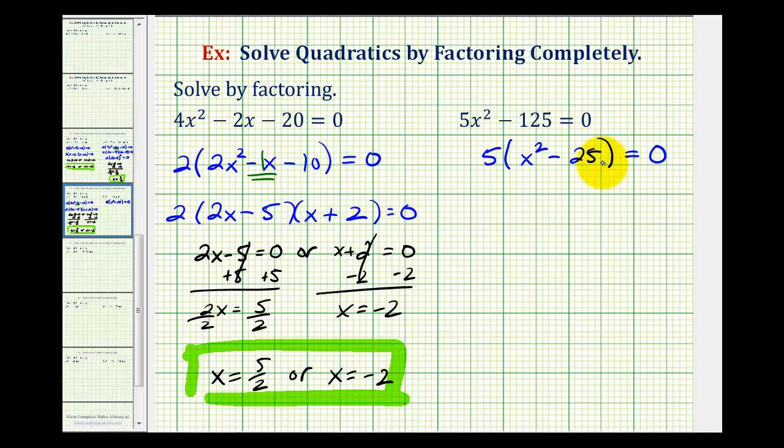So we can factor this again. We're still going to have this extra factor of 5. But now it's going to factor again into two binomial factors. The factors of x squared would be x and x. The factors of 25 would be 5 and 5. Because we have a difference of squares, one of the factors would be x plus 5 and one would be x minus 5.